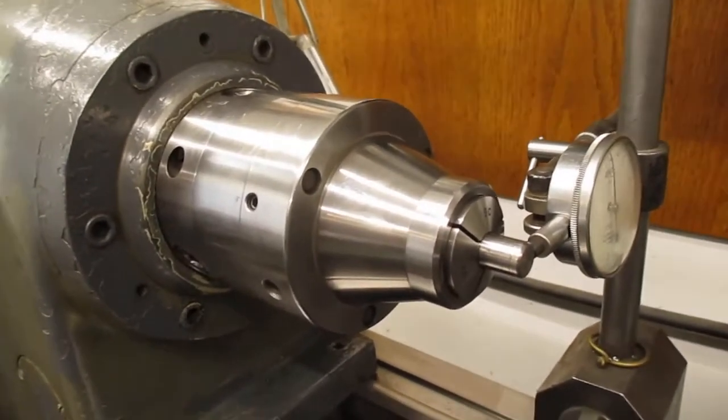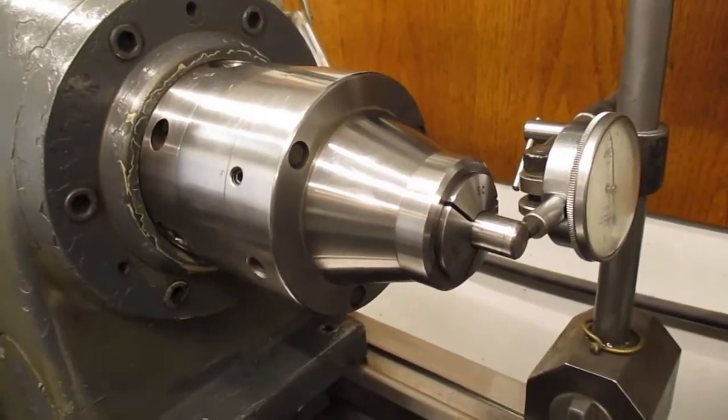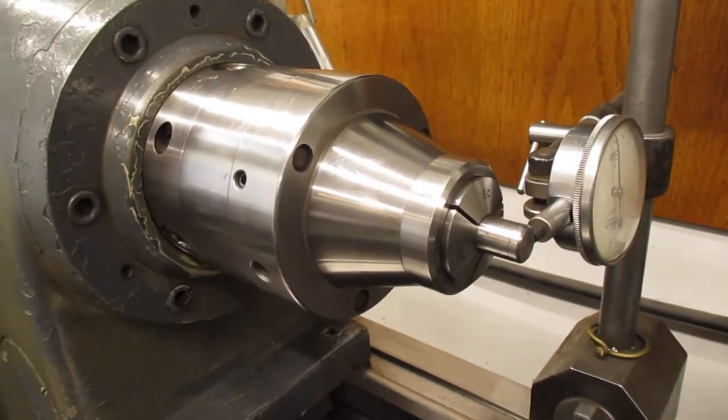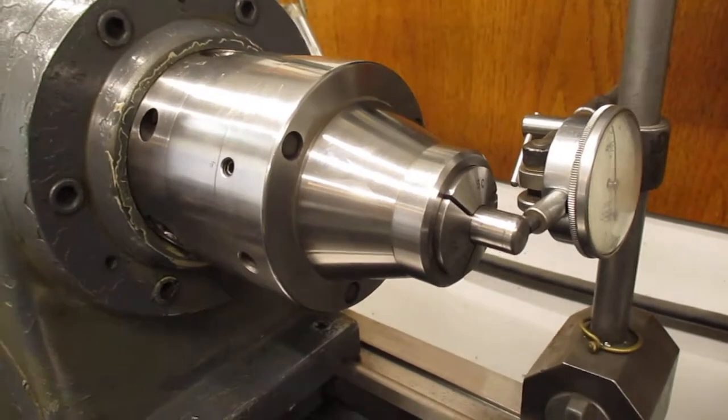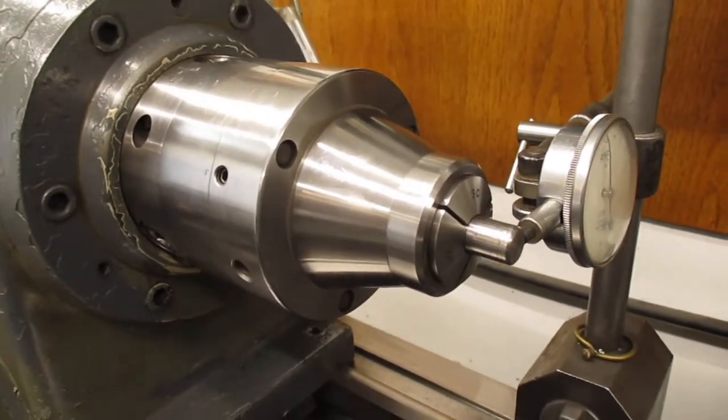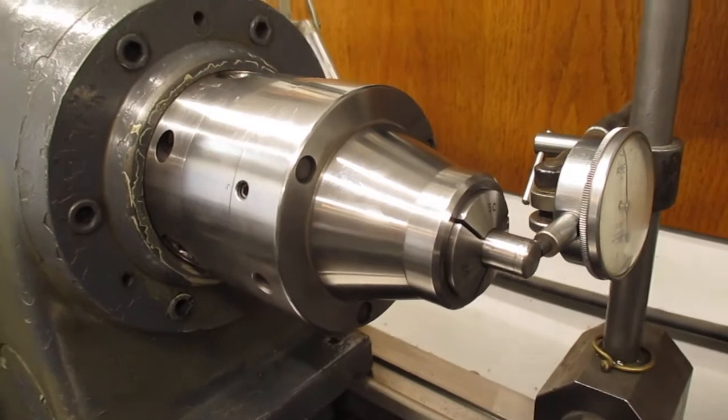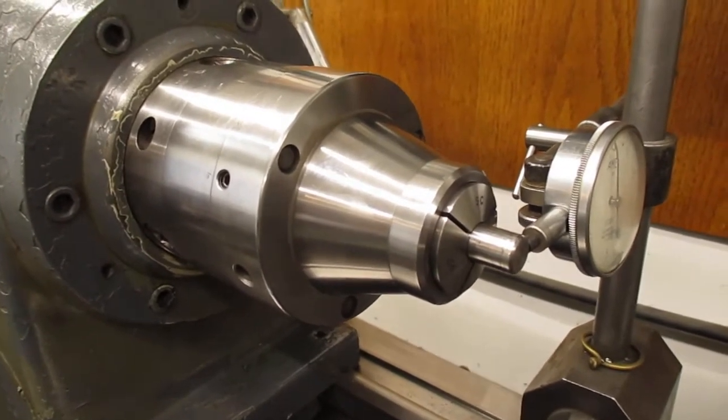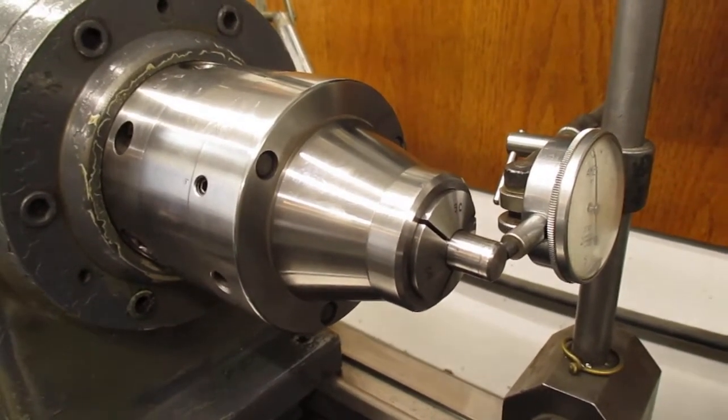I would say I would use this at five-eighths inch and smaller. Bigger than five-eighths inch, I'll go to the smallest four-jaw I have. I'll probably put that on for some tests a little later.